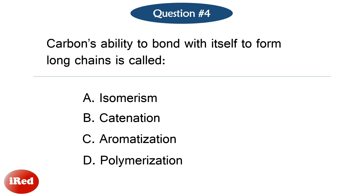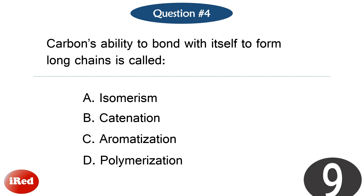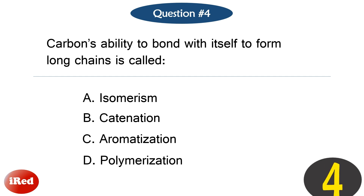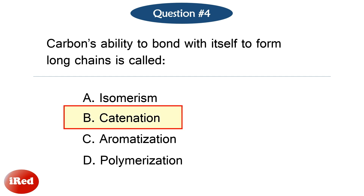Question number 4: Carbon's ability to bond with itself to form long chains is called what? The correct answer is letter B, catenation.